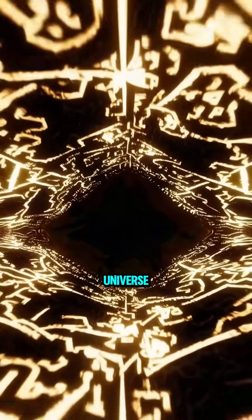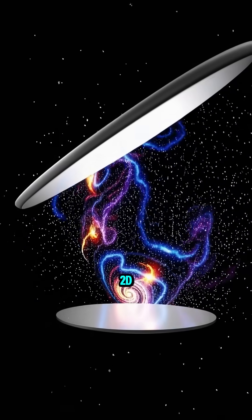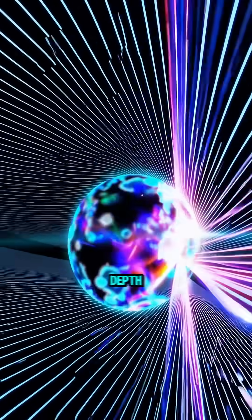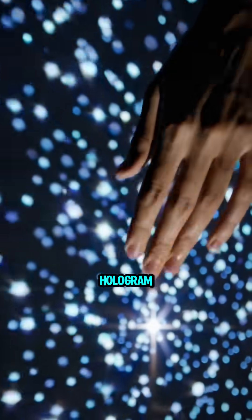Second, the holographic universe. This theory says our 3D reality is actually encoded on a 2D surface at the edge of the cosmos. Like a cosmic hard drive projecting the illusion of depth. Reality might be a hologram.